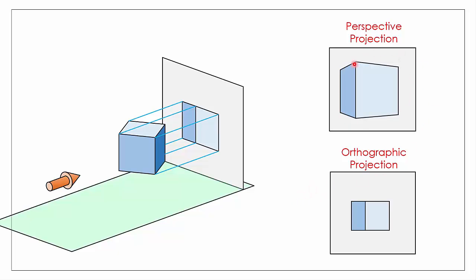There are advantages and disadvantages to each system. Perspective projection gives a very realistic view of the object because that's how we see the world through our own eyes. The disadvantage is that because each edge is distorted you can't measure from the object. In orthographic, we can clearly see that the three corners are the same size and we can physically measure from our drawing, so from a manufacturing point of view orthographic projection is much more useful. From a representation point of view, to get a general idea of what something looks like, perspective might give a more realistic view.